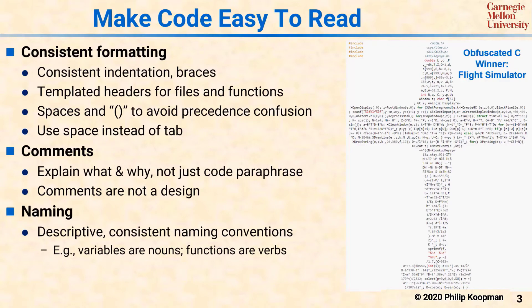A descriptive naming convention should be used that provides a consistent naming style. One common idea is that variables should be nouns and functions should be verbs or verb phrases. Abbreviations should always be consistent — for example, if the word 'length' is abbreviated as 'len' in one variable, that same three-letter abbreviation should be used everywhere to avoid confusion. One of the most dangerous things you can do with style is have different variables that have almost the same name but do different things — that's just asking for a bug.